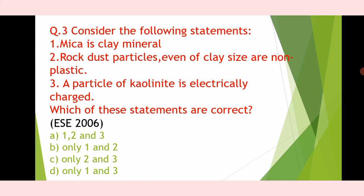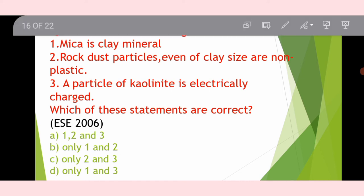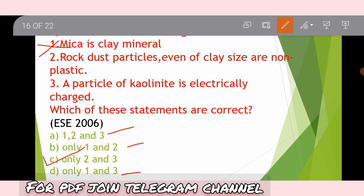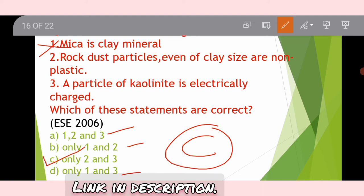Third question: Consider the following statements — (1) Mica is a clay mineral. (2) Rock dust particles even of clay size are non-plastic. (3) A particle of kaolinite is electrically charged. Statement 1 is wrong because mica is not a clay mineral. So options A, B, and D are out. Option C is the correct answer. Rock dust particles even of clay size are non-plastic is correct, and a particle of kaolinite is electrically charged is also correct.